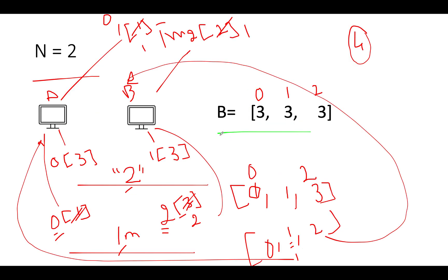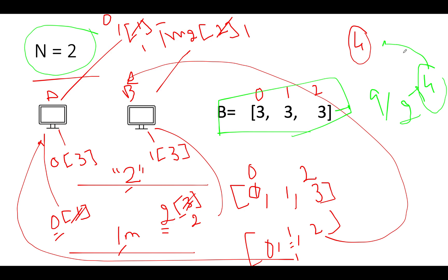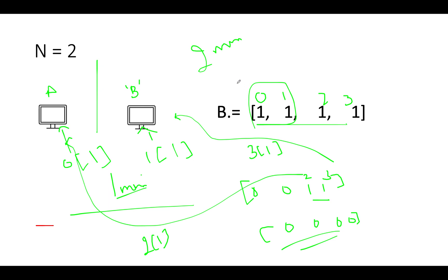The first intuitive approach: take the total sum of all batteries and divide by the number of computers. For example 1: (3+3+3)/2 = 4 — matches. For example 2: (1+1+1+1)/2 = 2 — also matches. This formula seems to work here, but that may be coincidence. Let's check another case.